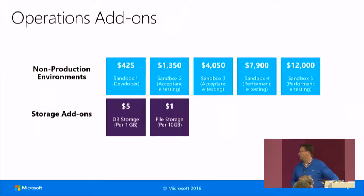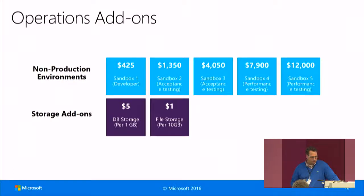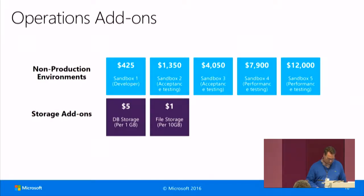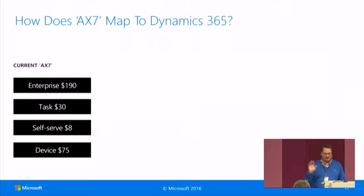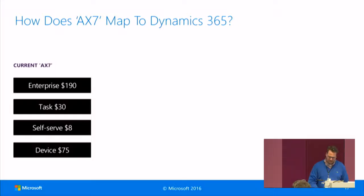Additional storage is available for $5 per month for database storage, and file storage is $1 per month per 10 GB. Keep in mind this is list price. There are different EA discount levels, and it gets cheaper. This is the highest possible price.